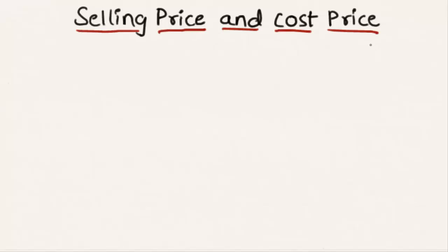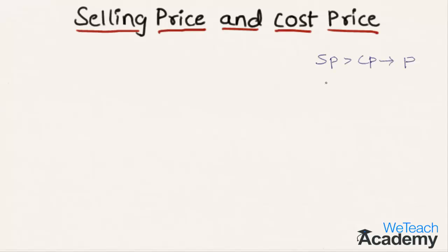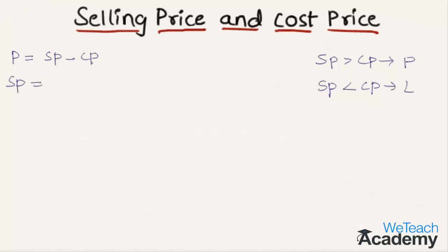When selling price is greater than the cost price there is a profit, and when selling price is less than the cost price there is a loss. The profit can be calculated by subtracting the cost price from the selling price. Symbolically, it can be represented as: Profit = Selling Price minus Cost Price.